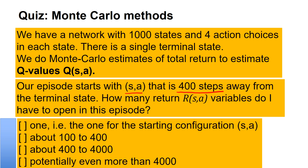You have four possibilities. Just one variable — the one we start in state SA, so it's the one for the starting configuration. Or about 100 to 400. Or about 400 to 4000. Or potentially even more than 4000.